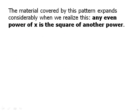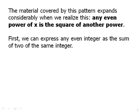The material covered by this pattern expands considerably when we realize that any even power of x is the square of another power. We can express any even integer as the sum of two equal integers — for example, 10 is 5 plus 5, and 18 is 9 plus 9. This is helpful when thinking about the sum of powers rule, which was covered in the multiplying expressions video. You can also study all exponent rules in depth in the powers and roots module.